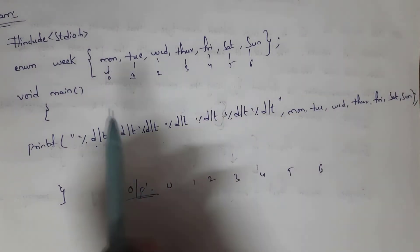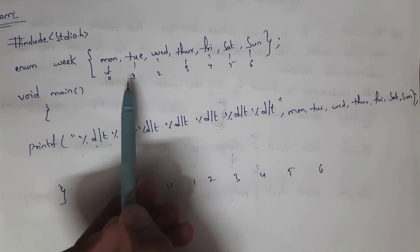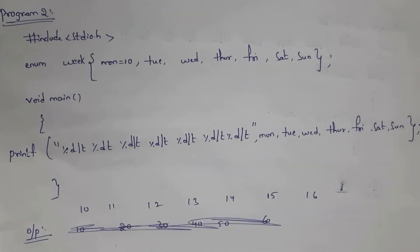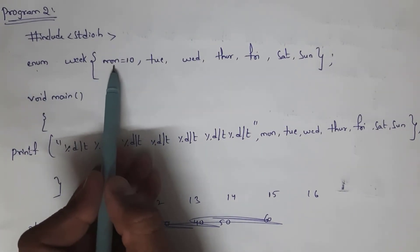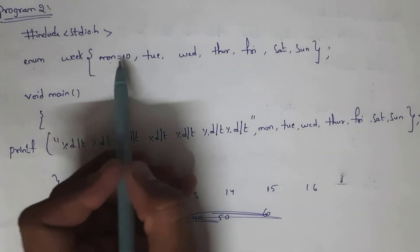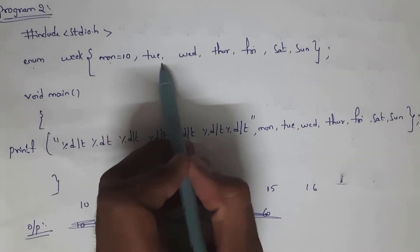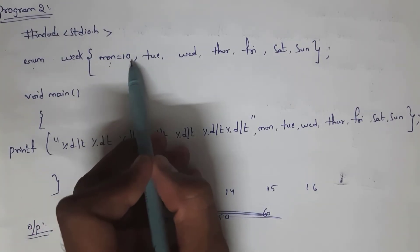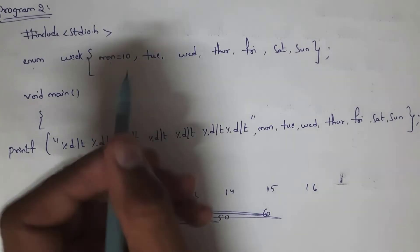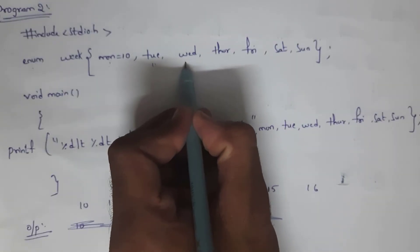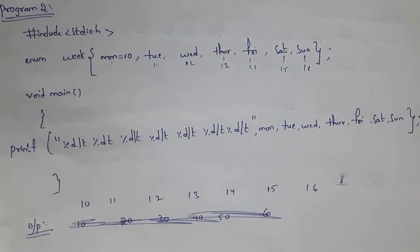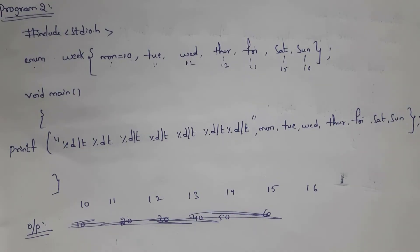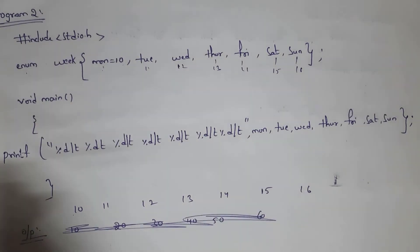By default, if you don't give any value, the first name takes value 0 and it keeps incrementing. In another example, I used the enum name 'week' and assigned Monday a value of 10. Whenever you assign a value to the first name, it keeps incrementing from there: Monday is 10, Tuesday is 11, Wednesday is 12, Thursday is 13, Friday is 14, Saturday is 15, and Sunday is 16. So the output is 10 11 12 13 14 15 16.